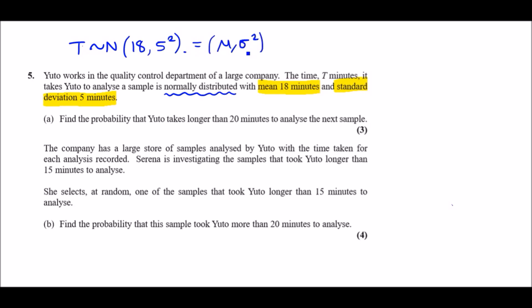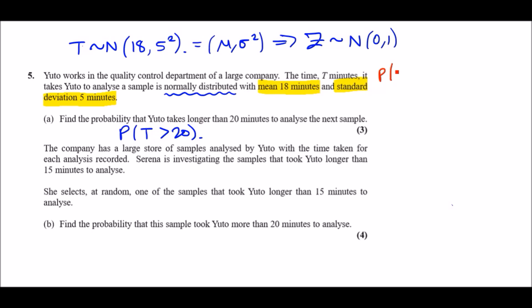Let's answer part A: find the probability that Uto takes longer than 20 minutes. We want P(T > 20). The only way to solve this is to convert to the Z distribution — the standard normal — which is normally distributed with mean 0 and standard deviation 1. So if T > 20, then Z must be greater than (20 minus 18) over 5.